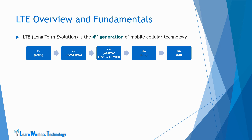The third generation of cellular technology, i.e. 3G, focused on higher data speed and improved voice services. It was known as WCDMA or Wideband CDMA in most parts of the world. In countries such as China where operators used the time division approach, they refer to 3G as TD-CDMA, and EV-DO was used by some operators in the USA.